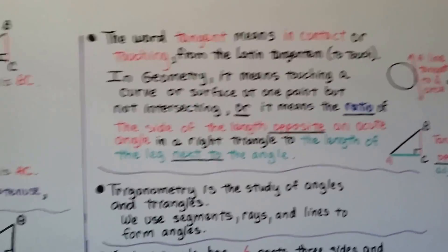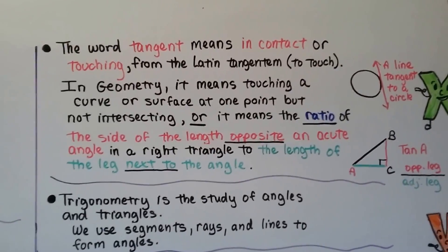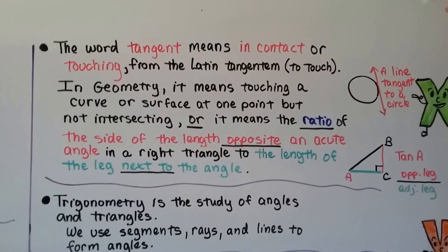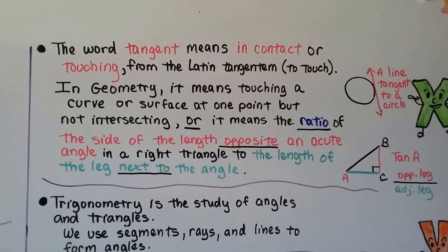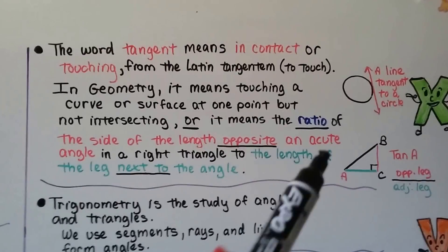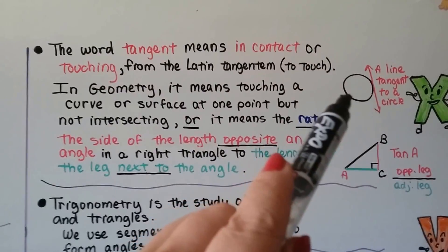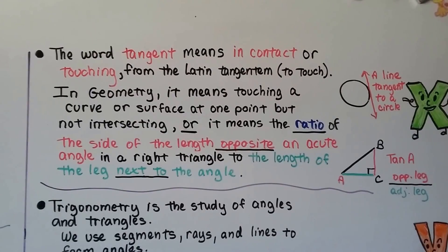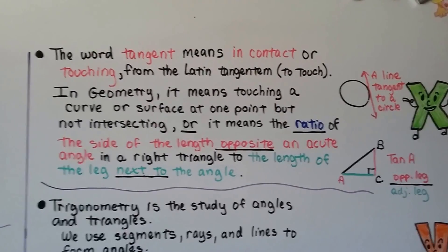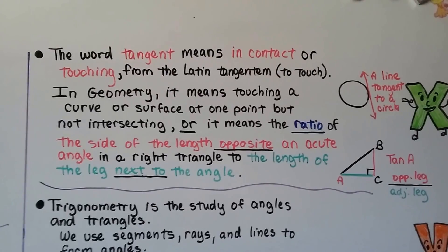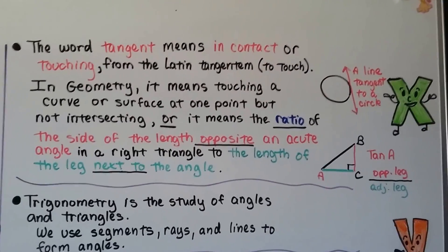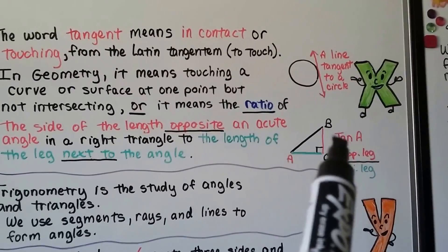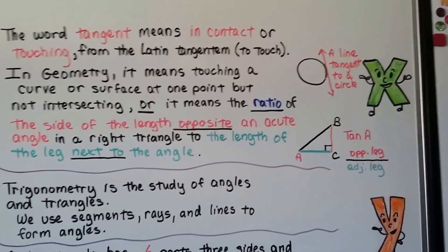The word tangent means 'in contact' or 'touching,' from the Latin tangentum, meaning to touch. In geometry it has two meanings: touching a curve or surface at one point but not intersecting — so here's a line tangent to a circle, touching but not intersecting — or it means the ratio of the side opposite an acute angle in a right triangle to the length of the leg next to the angle. So the tangent of angle A is the opposite leg over the adjacent leg.